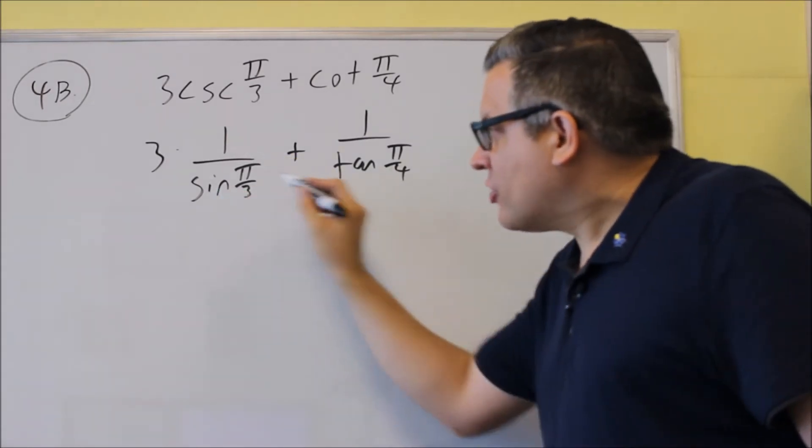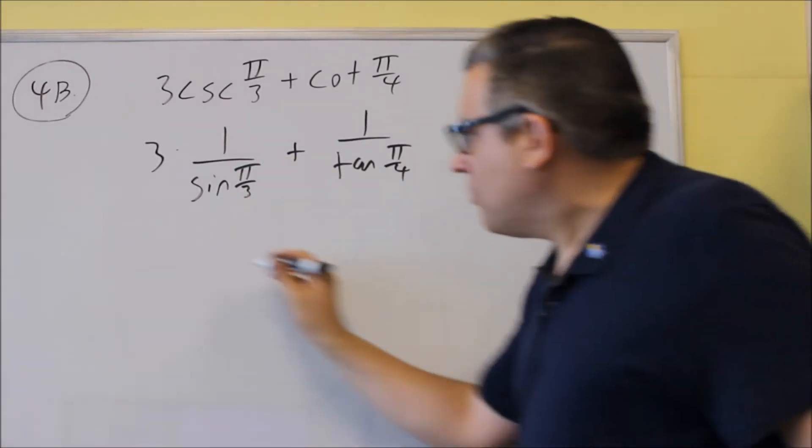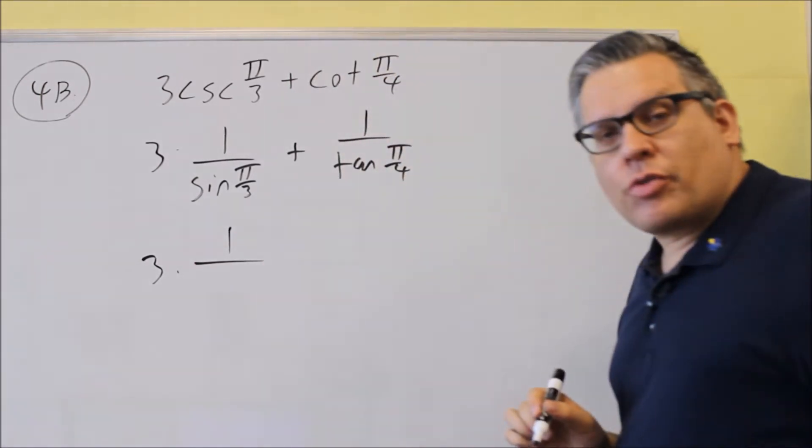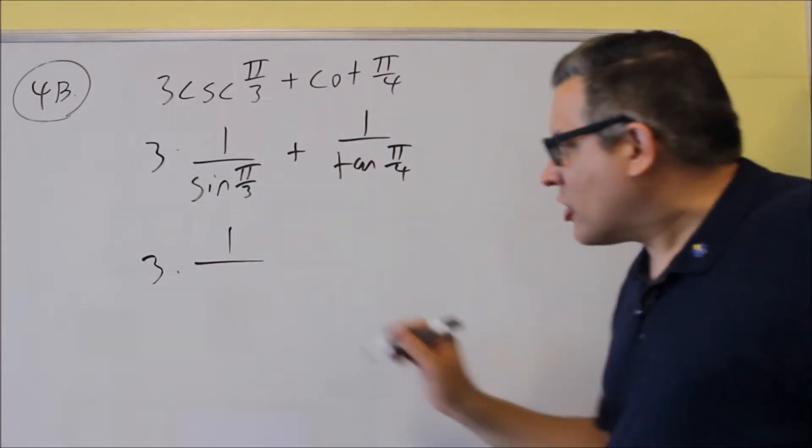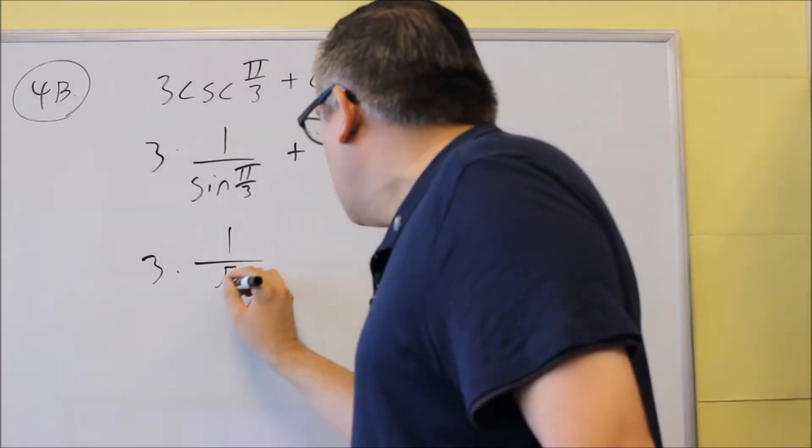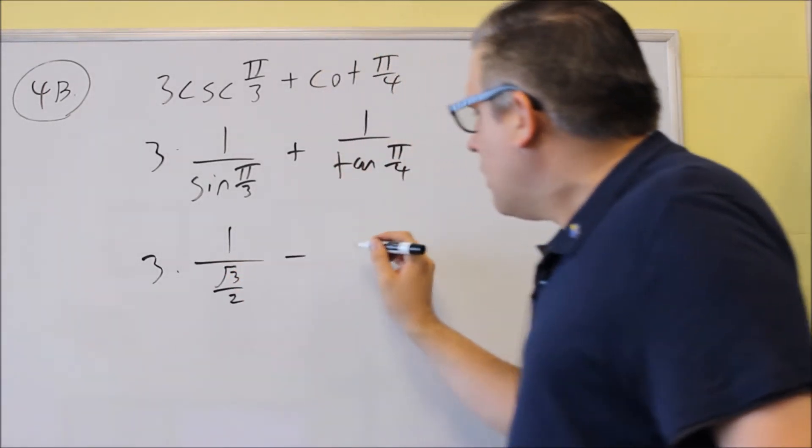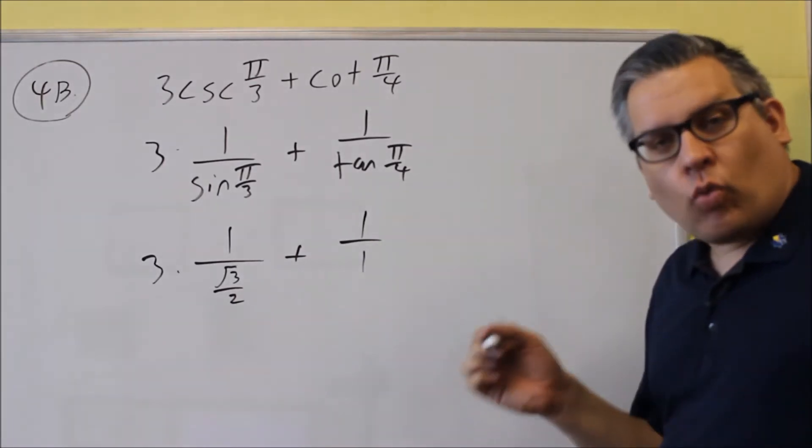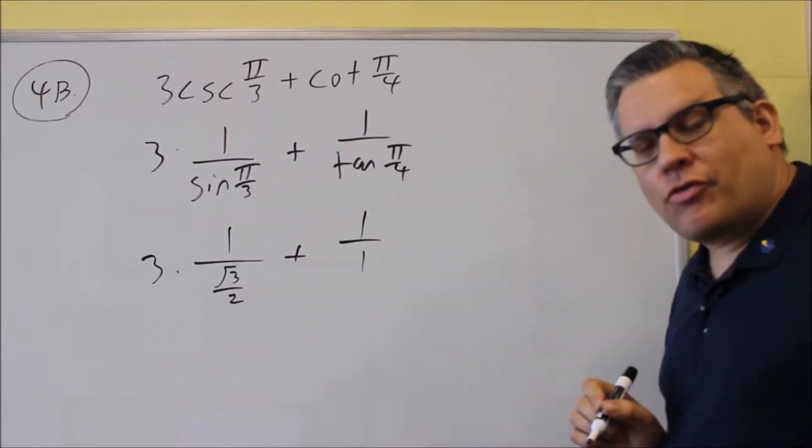Now we'll put the values in from the unit circle or the table. So we have 3 times sine π over 3, so that's sine 60, that's going to be square root of 3 over 2. Next, we have tangent of π over 4 is 1. So we have the values in from that.